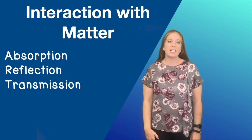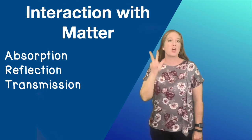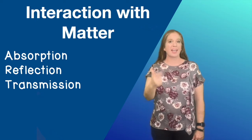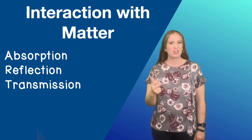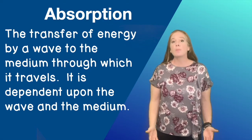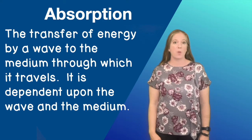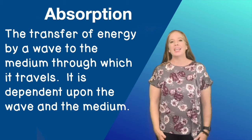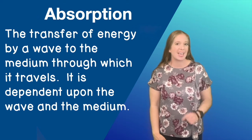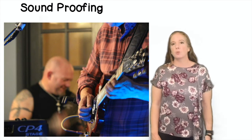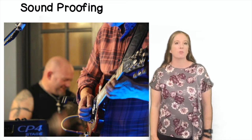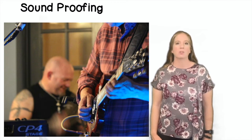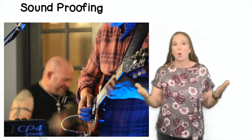Sound waves can interact with different mediums in three ways: absorption, reflection, and transmission. Absorption is the transfer of energy by a wave to the medium through which it travels, and it's dependent upon the wave and the medium. Musicians will sometimes soundproof a room in their house to keep their playing from disturbing other members in the house — the sound becomes absorbed in the walls.